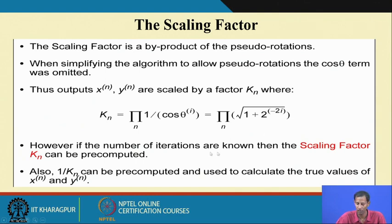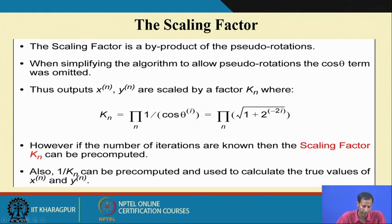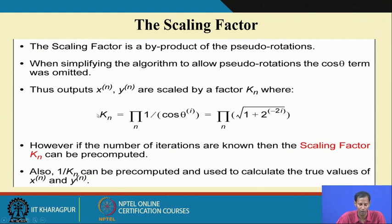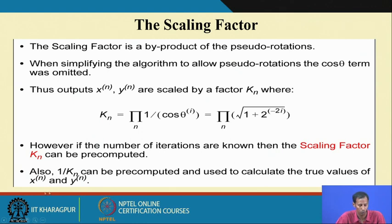If the number of iterations are known, then the scaling factor K_n can be pre-computed. As I know how many stages I will use, the scale factor can also be computed using this equation. Along with that, 1 by K_n can be pre-computed and used to calculate the true values of X_n and Y_n. Whatever value I get for X_n and Y_n, they are scaled by the factor K_n. So the original values of X_n and Y_n can be calculated by dividing by K_n, to scale down to the original value.